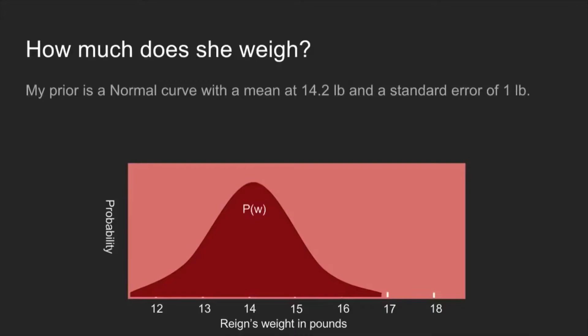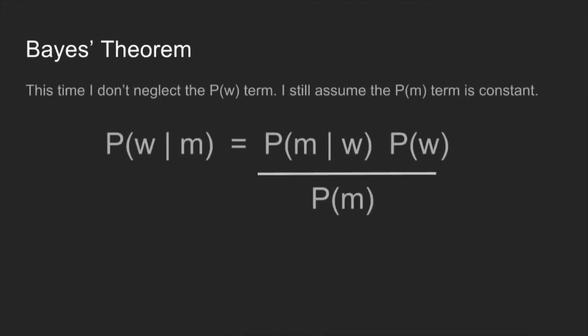This is the probability, the prior, the probability of her being a given weight. So this time we're not neglecting the prior term. We're not setting it constant. We're going to use it.